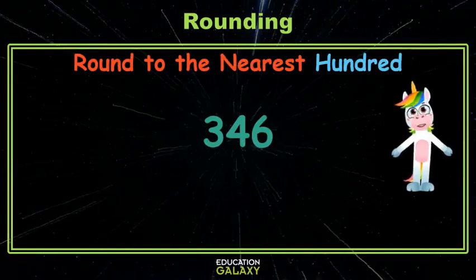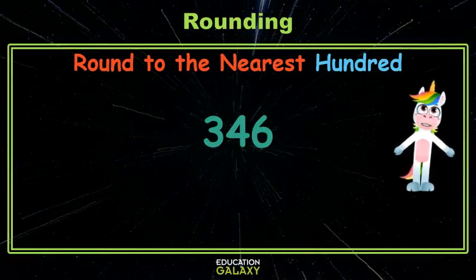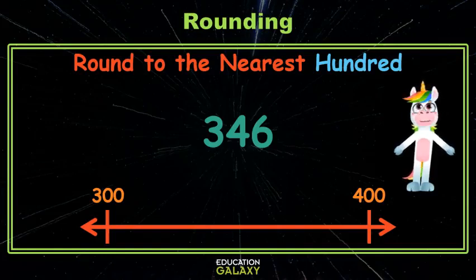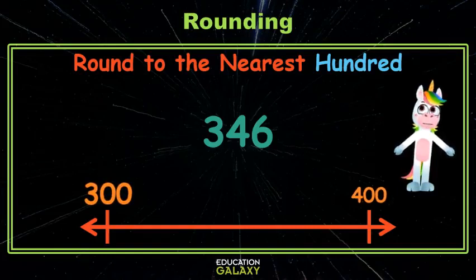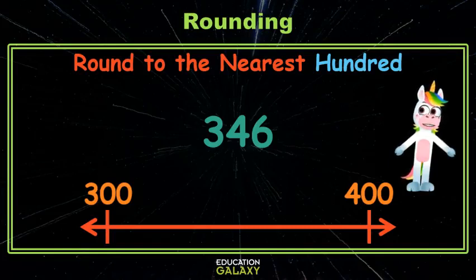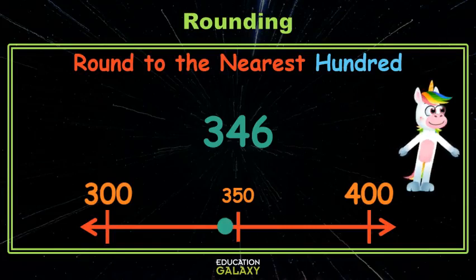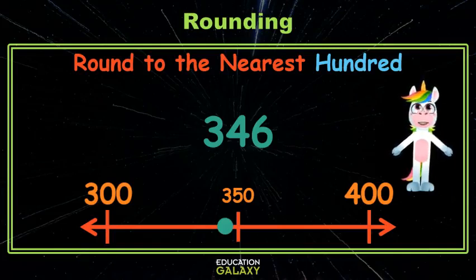Here we're rounding 346 to the nearest 100. Again, let's use a number line marking the 100 that comes before and the 100 that comes after. The 100 that comes before is 300, and the 100 that comes after is 400. And again, let's mark the spot in the middle, which we know is 350. Now let's put our number on the number line. 346 comes a little before 350, so we'll put it here. You can see that 346 is closer to 300 than 400.